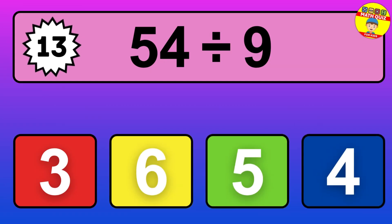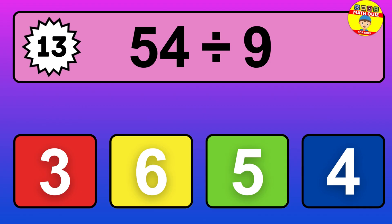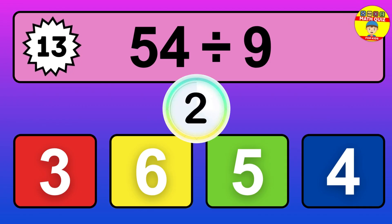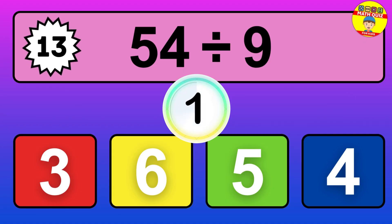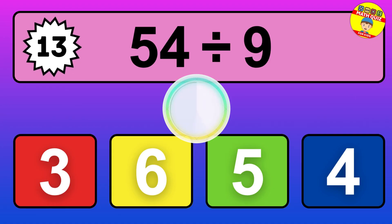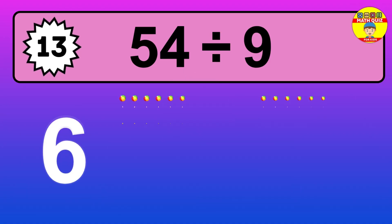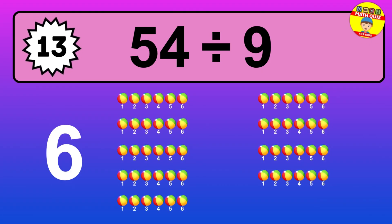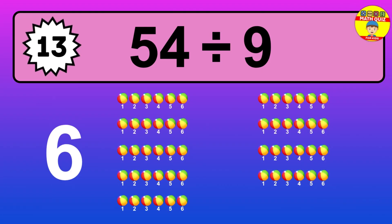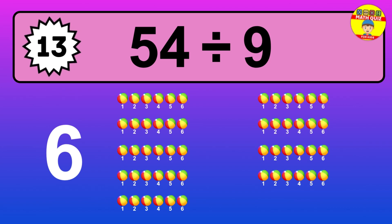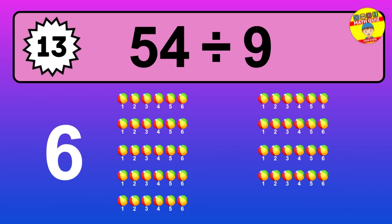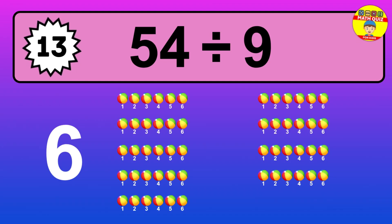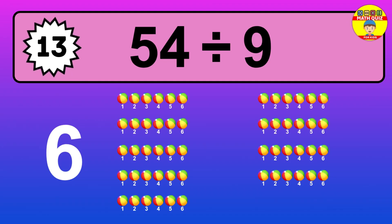54 divided by 9 — it's time to think. Let's go to the solution. Divide the number 54 by 9. Each group contains 9 units, so dividing 54 by 9 results in 6 equal groups. Thus, the result is 54 divided by 9 equals 6.